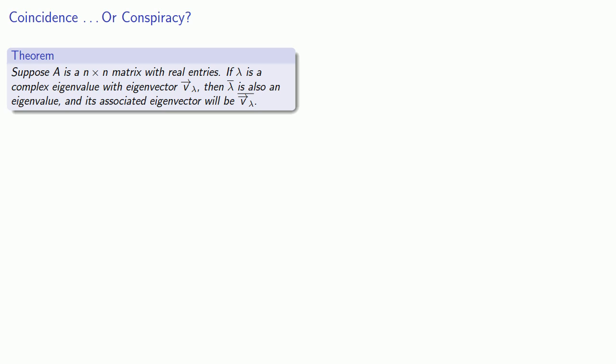And it turns out that it isn't. In particular, suppose A is an n by n matrix with real entries. If lambda is a complex eigenvalue with associated eigenvector v lambda, then the conjugate of lambda is also an eigenvalue and its associated eigenvector will be the conjugate of our original eigenvector.